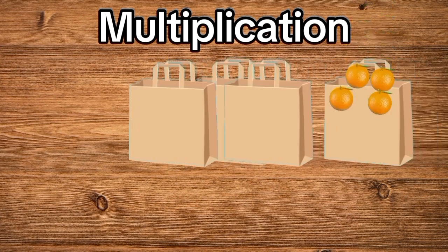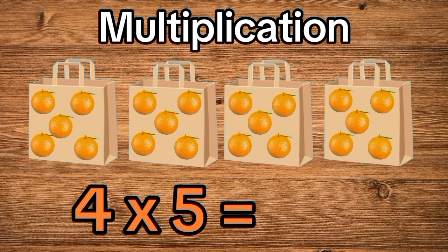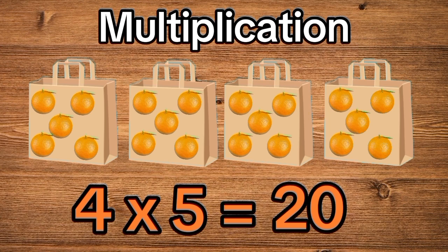How about if we have four bags and each bag has five oranges? That's four times five. Let's count them: one, two, three, four, five, six, seven, eight, nine, ten, eleven, twelve, thirteen, fourteen, fifteen, sixteen, seventeen, eighteen, nineteen, twenty. We have twenty oranges.